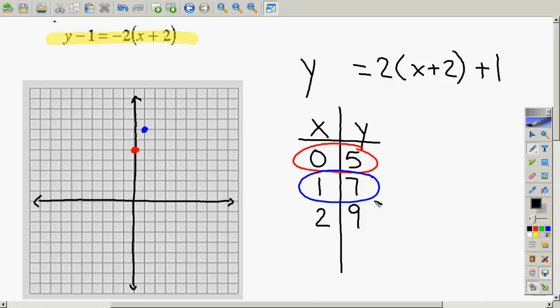The last point that I'll plot is 2, 9. 2 to the right, 9 up. It should go right there.